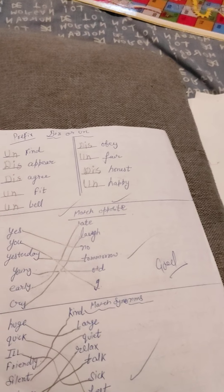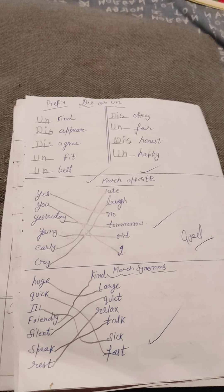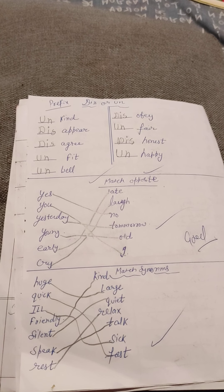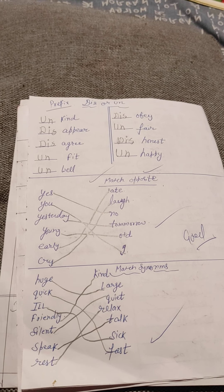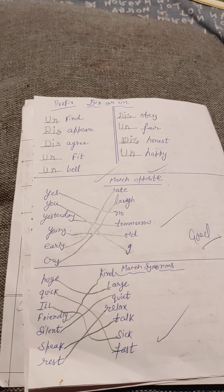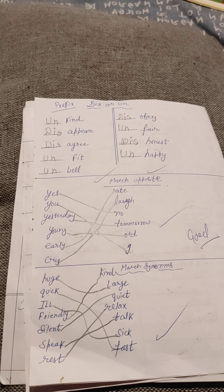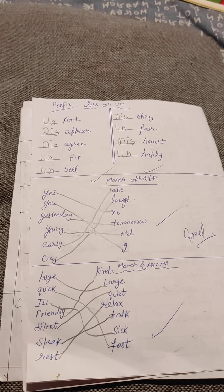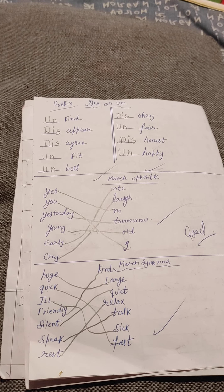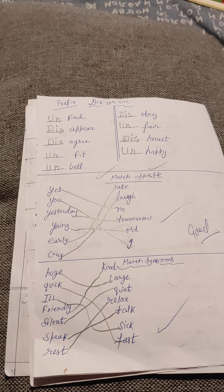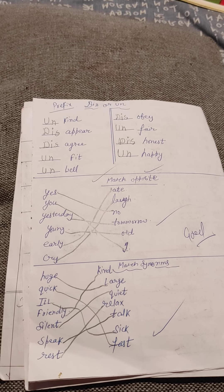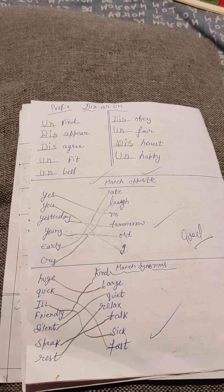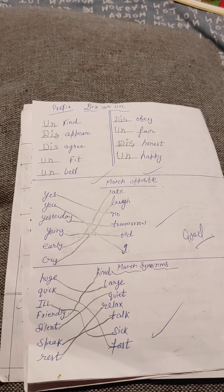We have to add a prefix — either 'dis' or 'un' — to words: unkind, disappear, disagree, unfit, unwell, disobey, unfair, dishonest, unhappy.